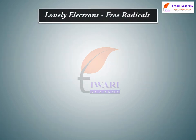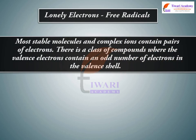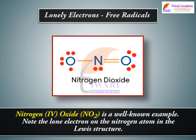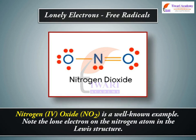Lonely electrons — free radicals. Most stable molecules and complex ions contain pairs of electrons. There is a class of compounds where the valence electrons contain an odd number of electrons in the valence shell. These molecules are known as free radicals. Free radicals contain at least one unpaired electron in their valence shell. In general, molecules with an odd number of electrons tend to be free radicals. Nitrogen dioxide, NO2, is a well-known example. Note the lone electron on the nitrogen atom in the Lewis structure.